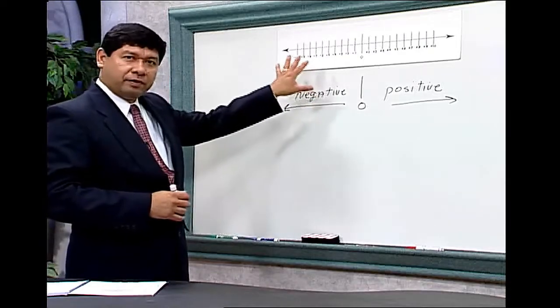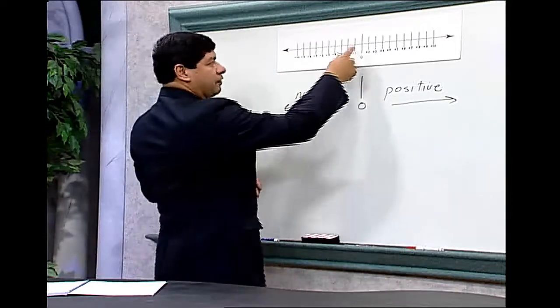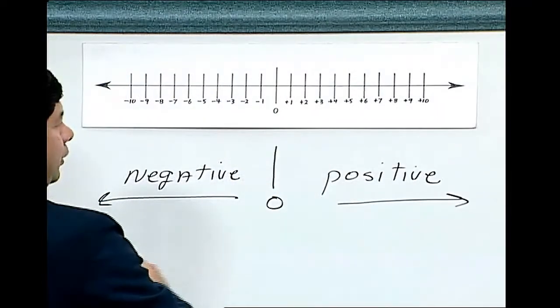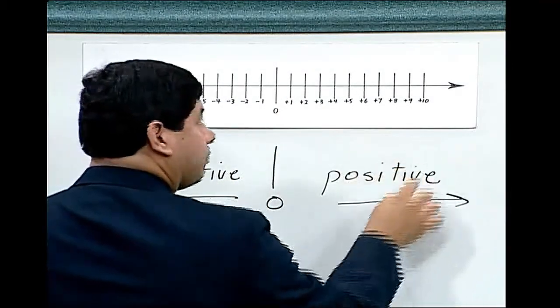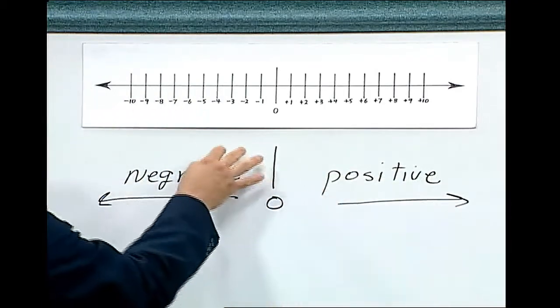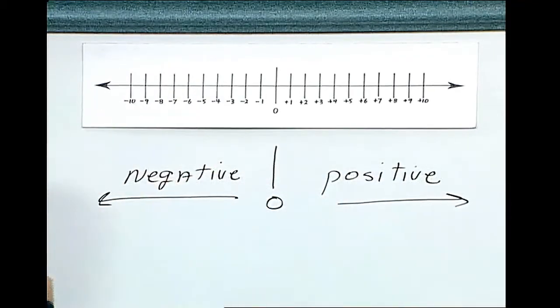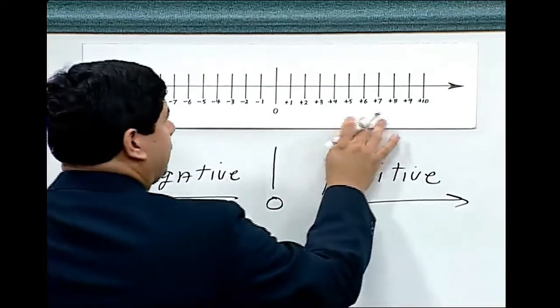On the number line here on the board, we can see that we've identified our point zero. The numbers to the right of zero are positive. The numbers to the left of zero are negative.